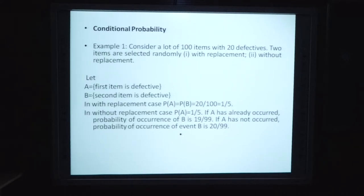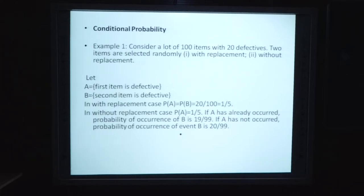Ya to first item defective hoga ya second item defective hoga. In with replacement case, probability of A is equals to probability of B, independent hua yeh, jis ki probability twenty divided by hundred - favorable cases 20 hain aur total number of cases hamare paas 100 hain - to probability of A aur B dono ki 1 by 5. Now without replacement case mein probability of A is equals to 1 by 5, kyunki number of favorable cases 20 rahenge aur total cases 100. Lekin second chance mein replacement nahi kiya, to total number of items 99 ho jaayenge, isliye probability of B is 19 upon 99. If A has not occurred, probability of occurrence of event B is 20 upon 99.